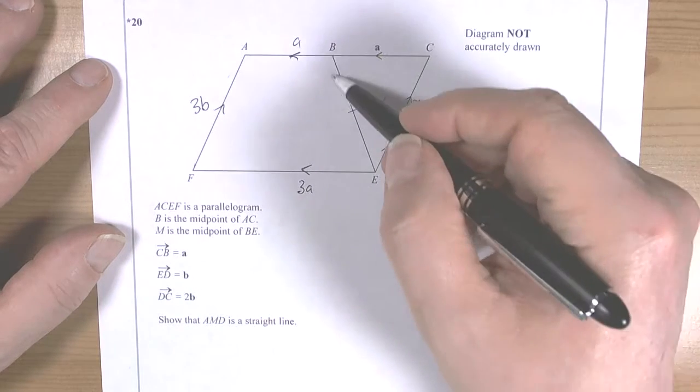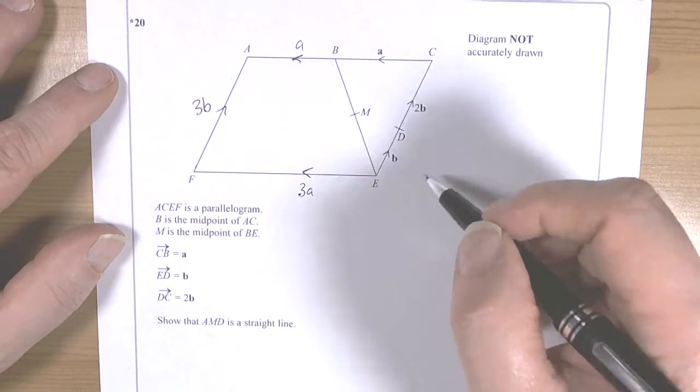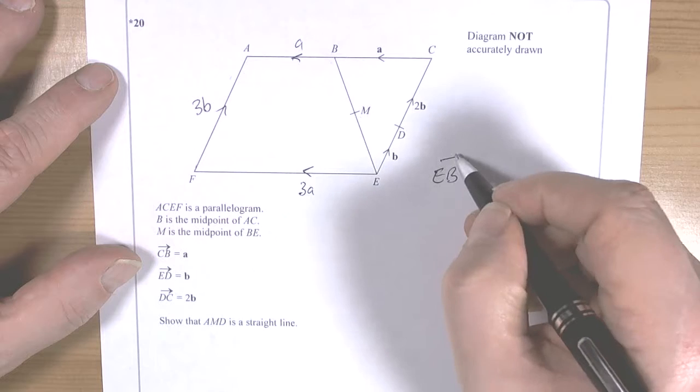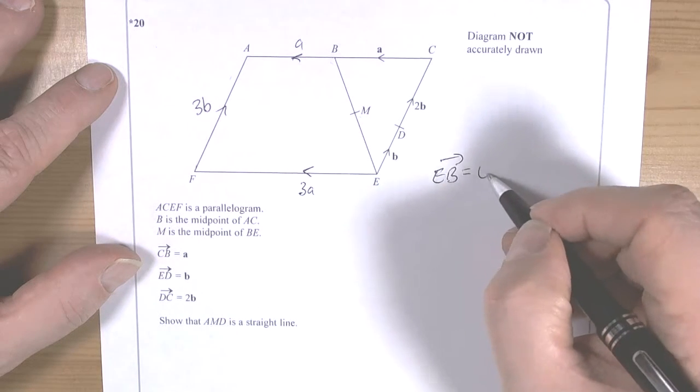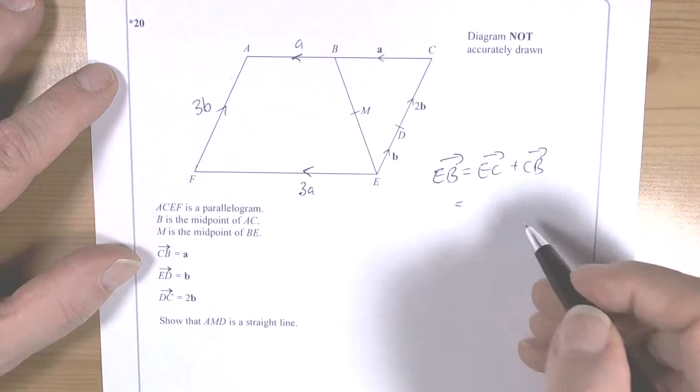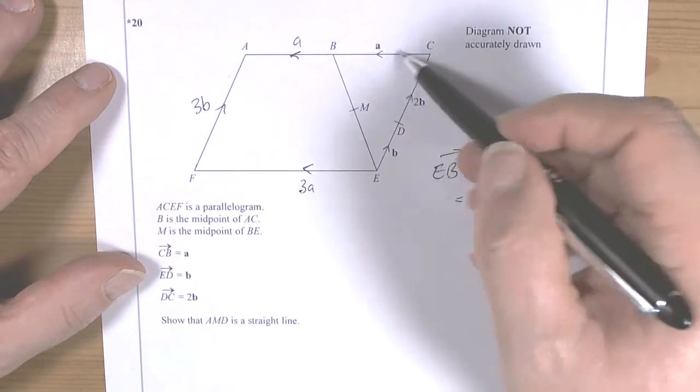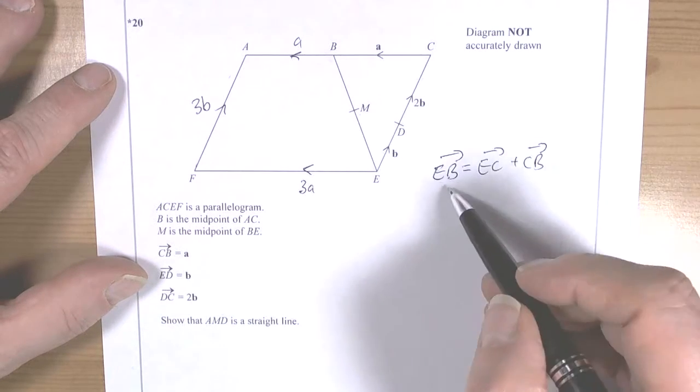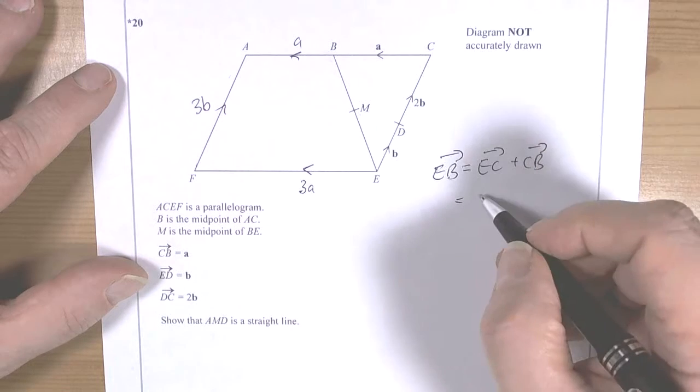And they're telling us that M is the midpoint of this line here. So if we work out what E to B is, then that's going to be E to C plus C to B. Remember the resultant of going on any journey will be the same whichever direction you go on. So E to B is going to be from E to C and then C to B.